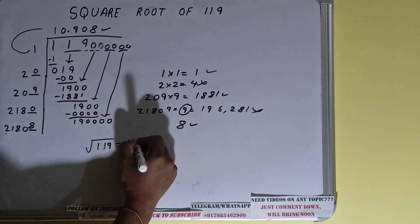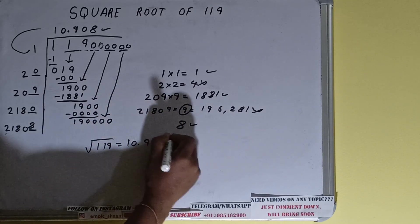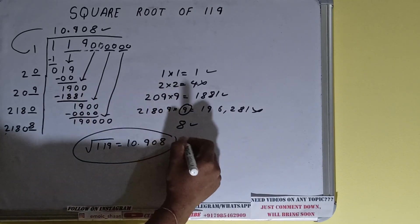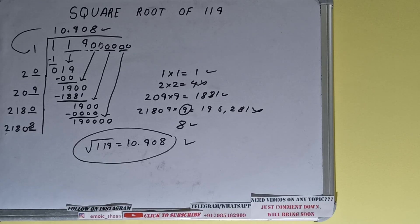So the square root of 119 is 10.908. That's it! If you found the video helpful, please hit the like button, consider subscribing, and thanks for watching.